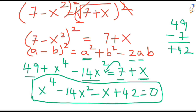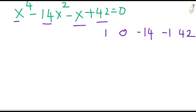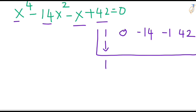Using the synthetic division method I am going to find the roots of this biquadratic equation. Since it's a degree-4 equation, we will get 4 roots. To use synthetic division, take the coefficients of all terms: X to the power 4 has coefficient 1, X cubed is not present so write 0, X squared has coefficient minus 14, X has coefficient minus 1, and the constant is 42.